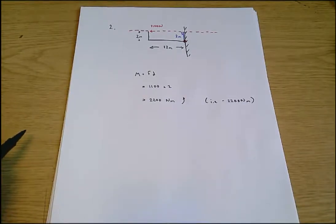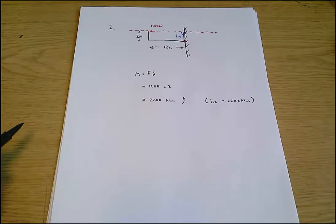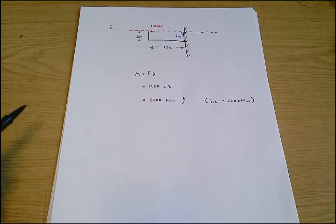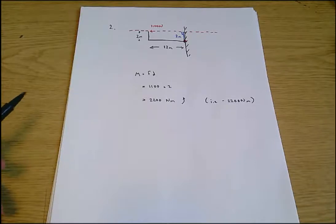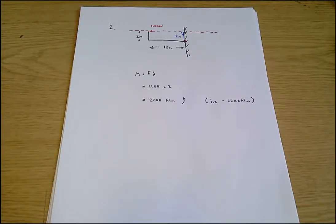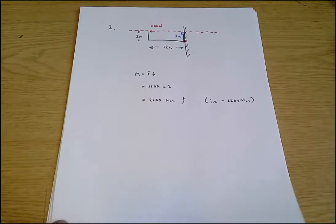So this is anti-clockwise, and we'll call that negative 2200 newton meters. The advantage of making clockwise moments positive and anti-clockwise moments negative is that if we have lots of moments acting and want to sum up all their effects, we just add up the positives and negatives and anti-clockwise will cancel out clockwise. That's question two complete.